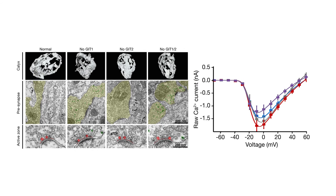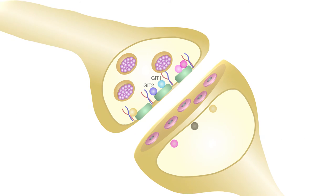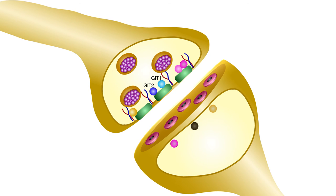Taken together, these findings indicate that GITs regulate synaptic signal strength primarily by modulation of the efficiency of neurotransmitter release.